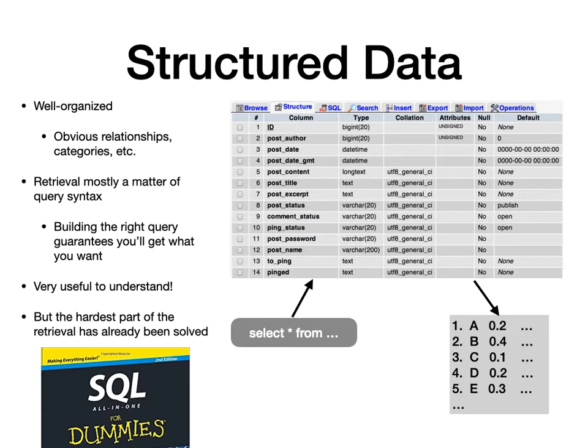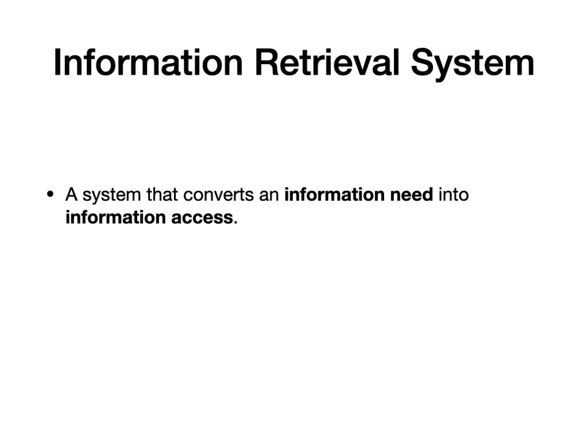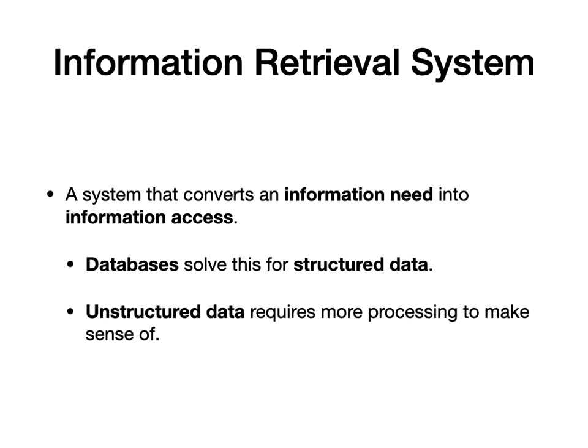What we're focusing on in this class is building a system to retrieve unstructured data. The information retrieval system is the kind of thing that converts an information need into information access. Databases do that quite well for structured data, but for unstructured data we've got to do a little bit more work — and that is the interesting work we will be focusing on in this class.